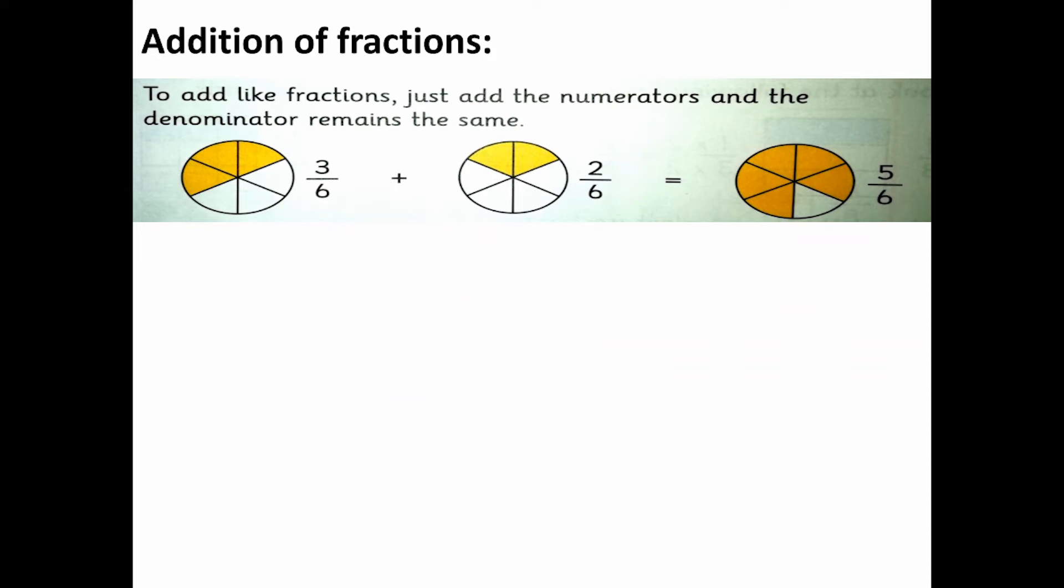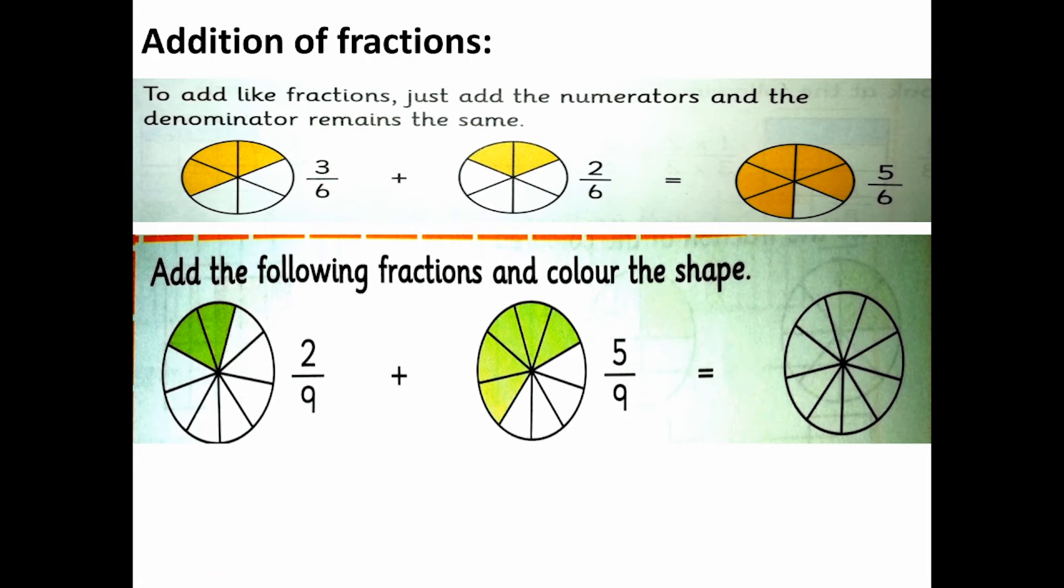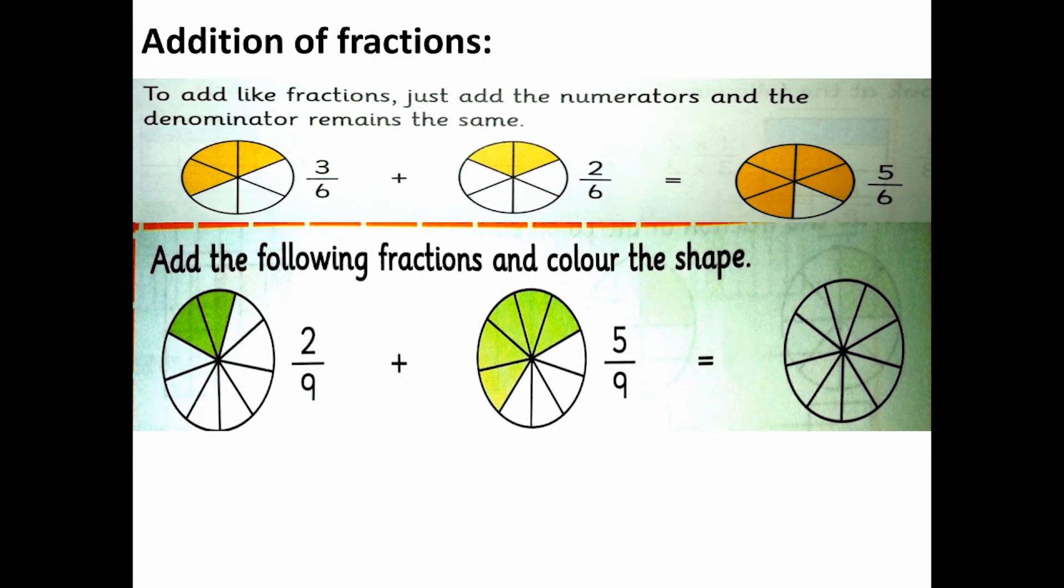What is the numerator? The denominator is the same, denominator 6. 3 plus 2 equals 5, and the denominator 6 stays the same. Let's start the questions. Add the following fractions and color the shape. We need to add the fractions and color the shape.